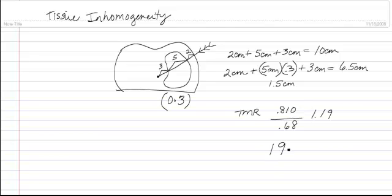And the increase in dose would be like 19%. And that would tell you have 19% increase in dose when you're going through this lung field because of the effective depth being 6.5 due to that heterogeneity factor of 0.3.